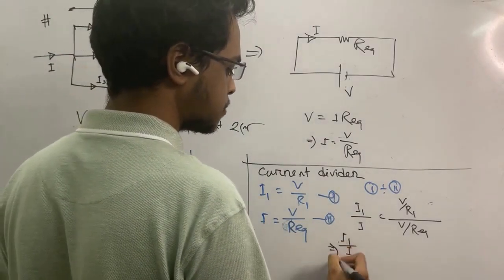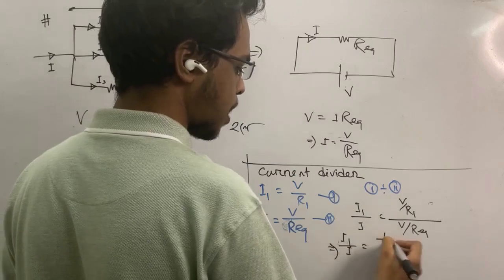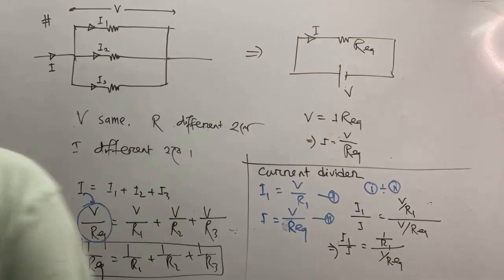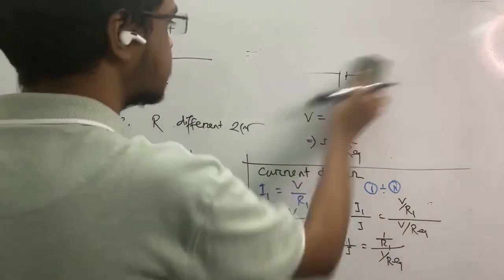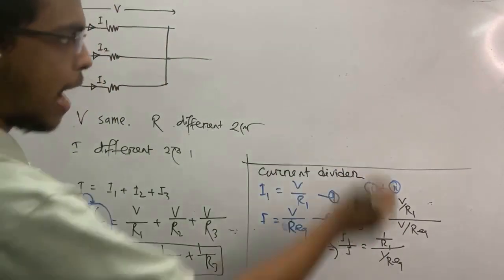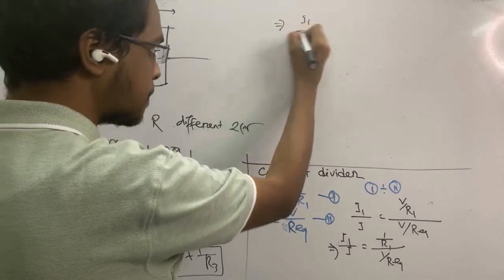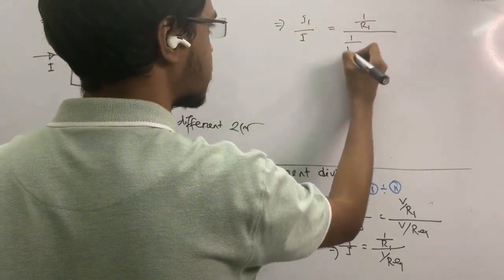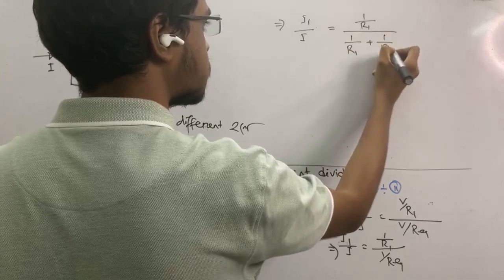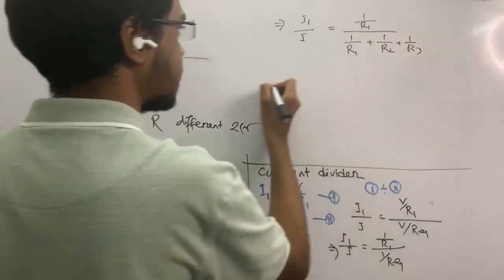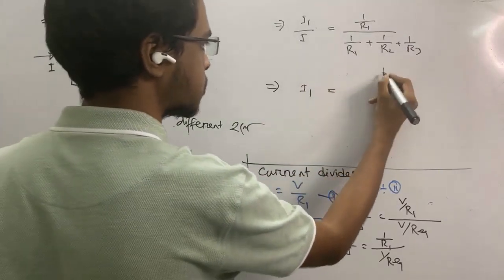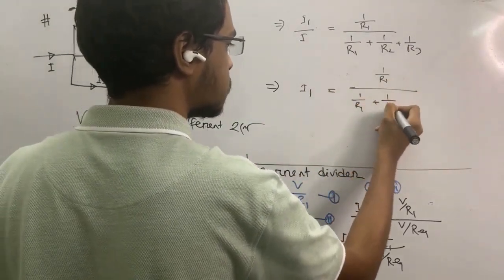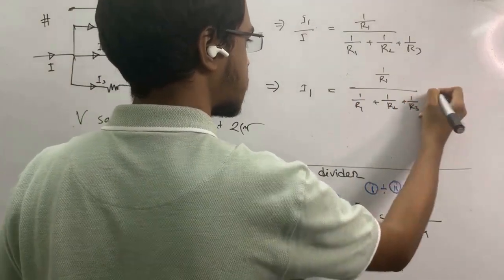i1 by i is equal to 1 by R1 divided by 1 by R equivalent. I will show you the same thing. I1 by I equal to 1 by R1 divided by 1 by R1 plus 1 by R2 plus 1 by R3, into I.